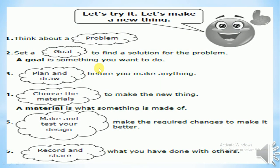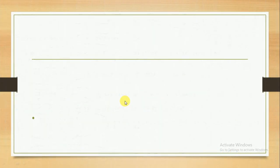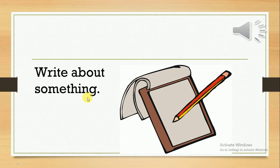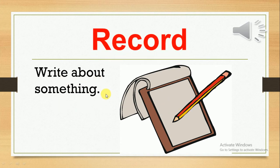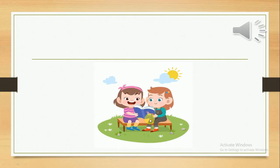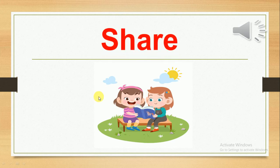Let's go back to the design process. We have six steps: 1) Think about a problem, 2) Set a goal, 3) Plan and draw, 4) Choose the material, 5) Make and test your design, 6) Record and share. When you write about something, you record. When you show something to your friend, that is sharing.